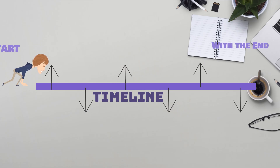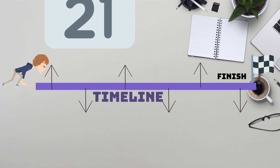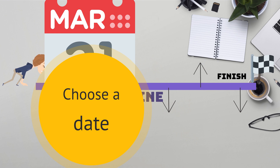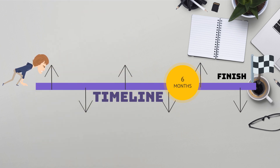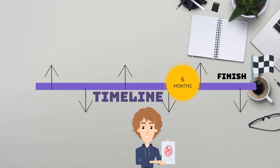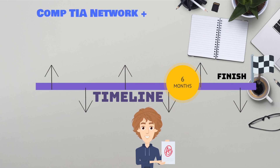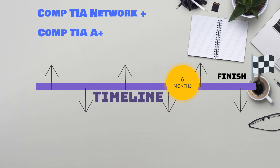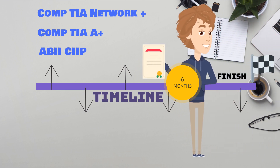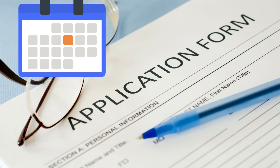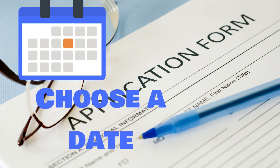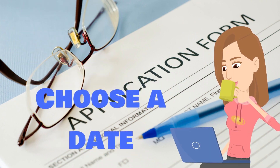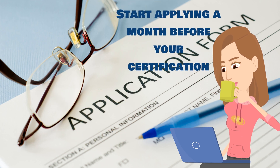Planning your timeline — start with the end in mind. Select the finish date right from the beginning. You'd need to choose a date where you would complete your training; the recommended timeline is about six months. Then choose a date where you'd like to get certified in a specific area, for example networking or CompTIA, plus the CIIP Imaging Informatics Professional certification — the recommended timeline for that is also about six months. Lastly, choose a date where you would start applying to jobs. You can start applying at the five-month point based on the fact that you may pass your first exam within six months.